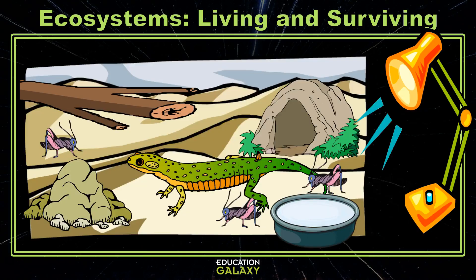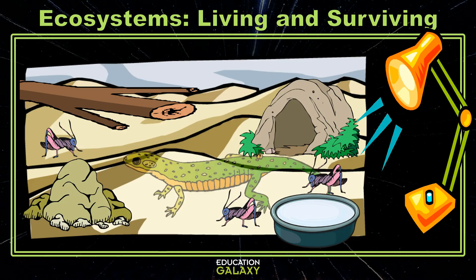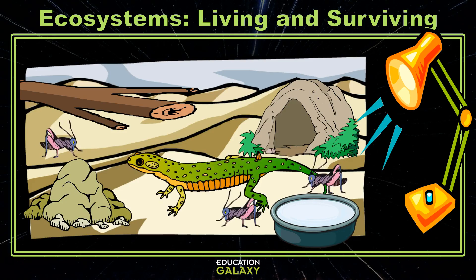Let's take a look at our pet lizard. He lives in a terrarium. Let's pick out all of the non-living factors in his ecosystem. He has a heat lamp — that's not alive. He has sand, rocks, water, and his cave. Now let's look for all of our living things. We obviously have our lizard, but we also have all the crickets that he eats and the branch he crawls on. I know the branch is tricky, but it came from a tree, and while it's dead now, that means it was living, and is thus a living factor.